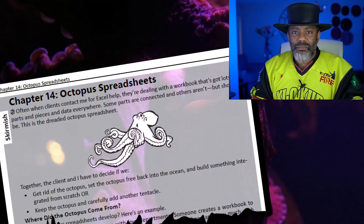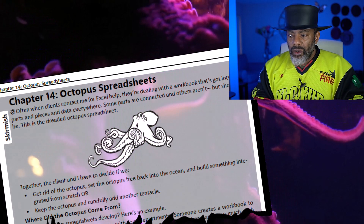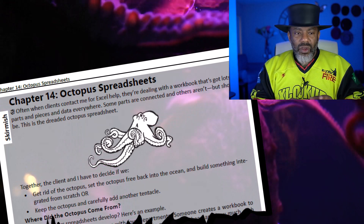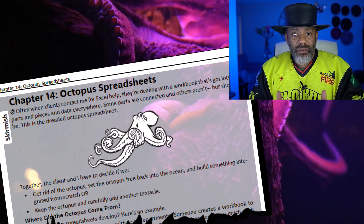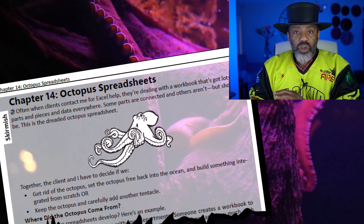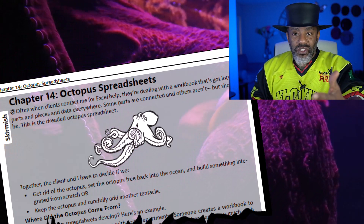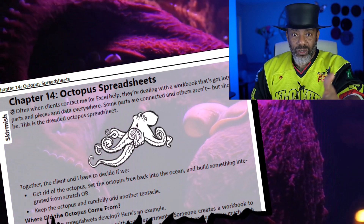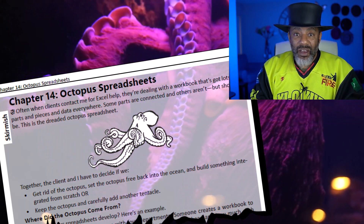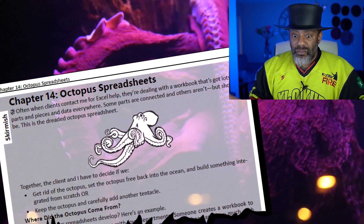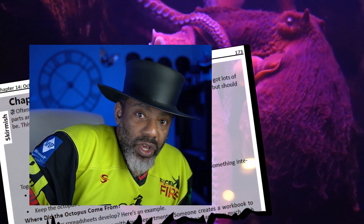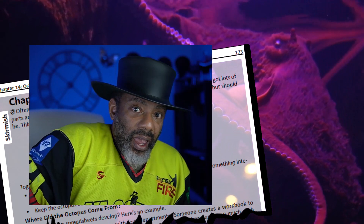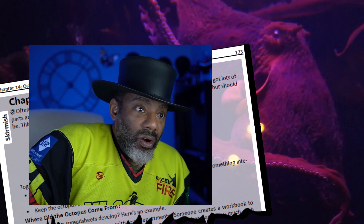I wrote that section and that's where I talk about the different constraints you have. What if the client says, 'I understand this is a mess and we need to redo it, but we don't have two months — we've got 10 days.' That's the reality you have to deal with. You might have to add another tentacle or integrate a few tentacles. You do what you can.